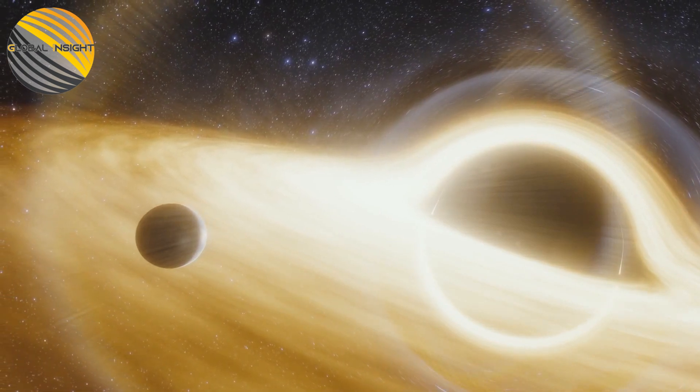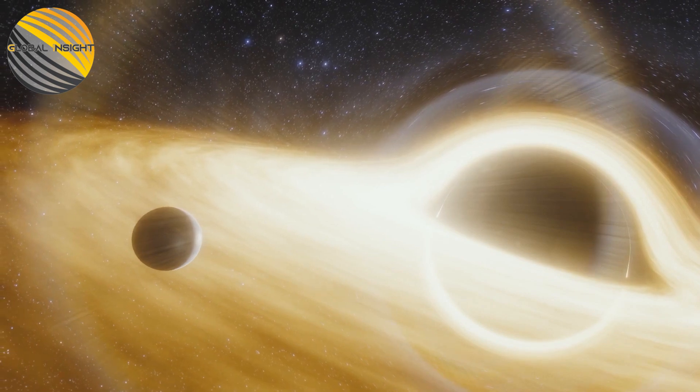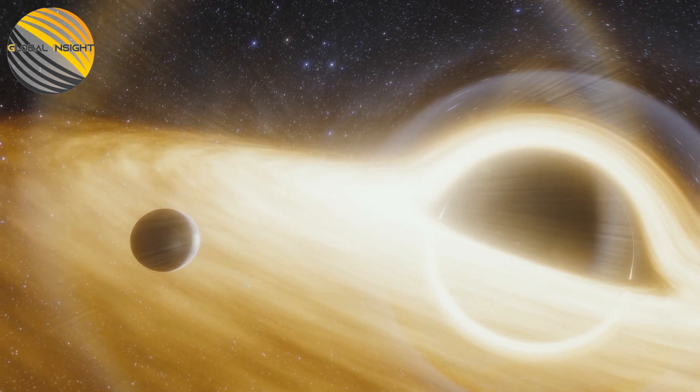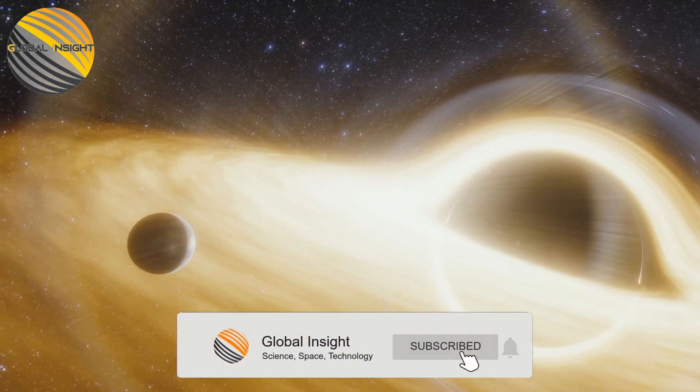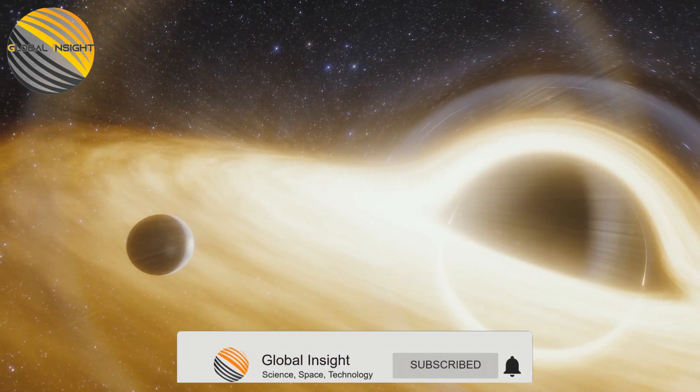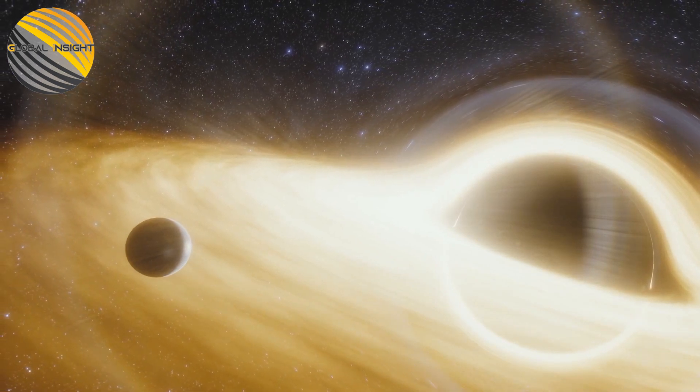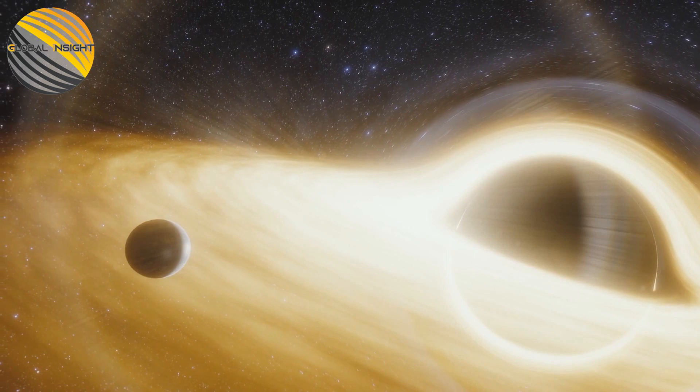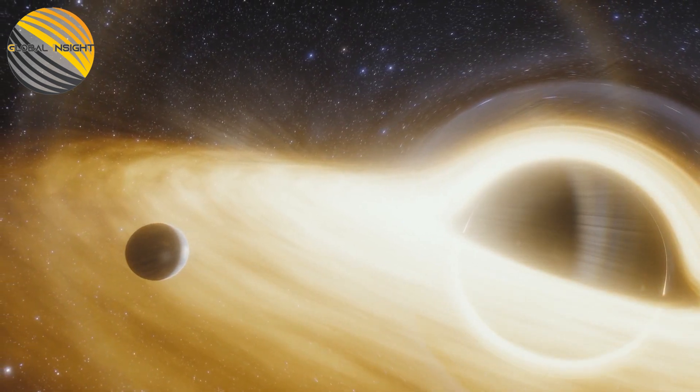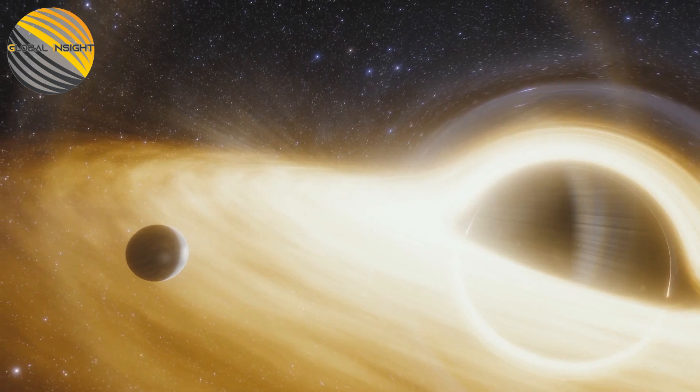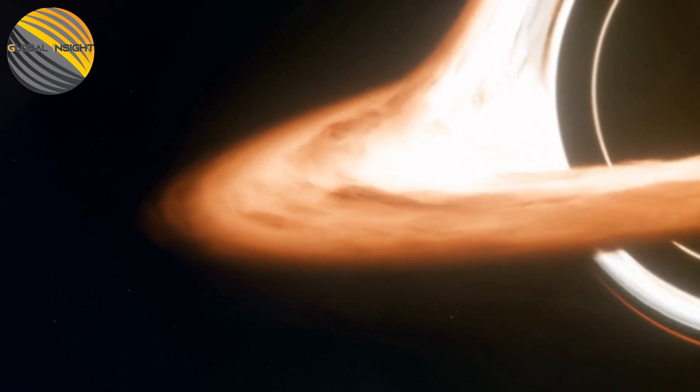Large stars with masses roughly 5 to 10 times that of the Sun serve as the foundation for black holes. In their burning cores, larger stars fuse increasingly heavier elements like silicon or magnesium as they approach their end of life. However, the star is bound for violent self-destruction once this fusion process begins to form iron.